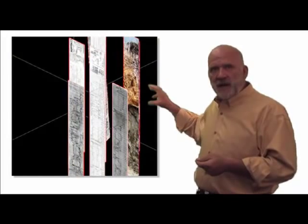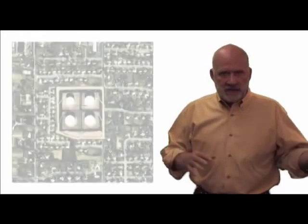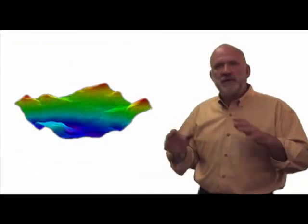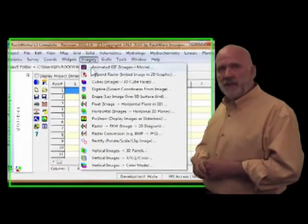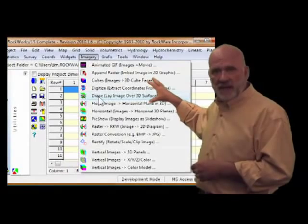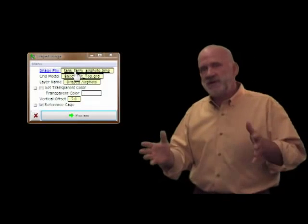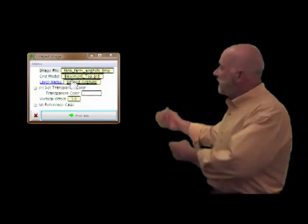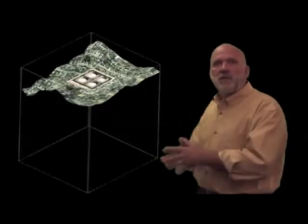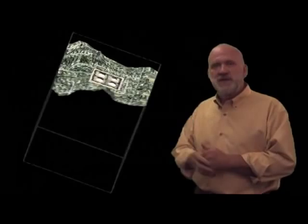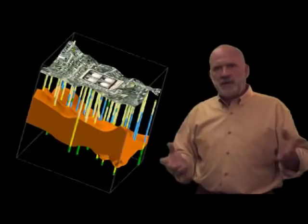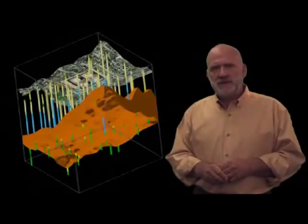Now, here's one of the most commonly asked questions in regards to images: how can we drape an image — an air photo, a satellite image, or a map — over a three-dimensional surface? Here's how. Select the Drape option from within the Imagery menu. Identify the reference grid, i.e., the grid that defines the surface over which the image is to be draped, and presto. As with all RockPlot 3D diagrams, any display such as this draped image can be combined with other types of data to create some fairly useful presentations.